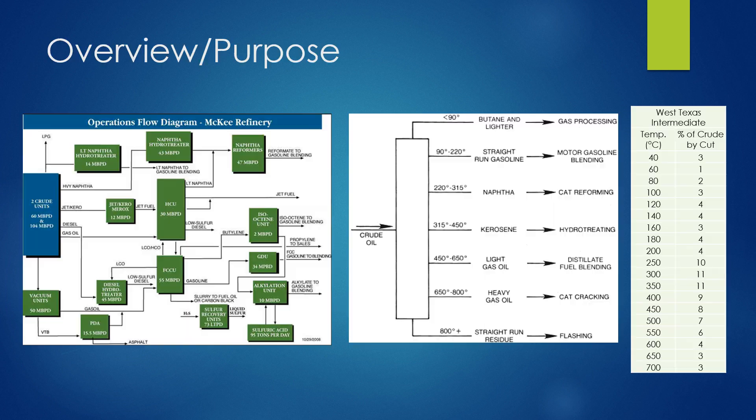Our project was an optimization project, and our goal was to optimize the profit of the Valero McKee Refinery. When we talk about profit, we're not just talking about the value of the products — we're talking about the value of the products subtracting the cost of the crudes and operating unique costs for each of the crudes. This image on the left is a schematic for the Valero McKee Refinery, including all of the units.